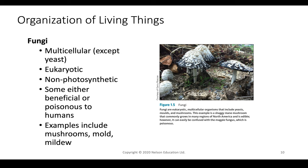Fungi are the next category — typically multicellular, with the exception of yeast, which we use to brew beers and breads. These are also eukaryotic. Fungi are not photosynthetic, meaning they cannot create their own food from sunlight. They are typically detrivores or decomposers — they decay other organisms to create their food. This here is a shaggy mane mushroom found in North America that is edible, but it can be easily confused with a magpie fungus, which is poisonous and lethal. Some examples of fungi include mushrooms, mold, and mildew.